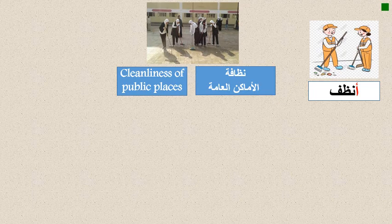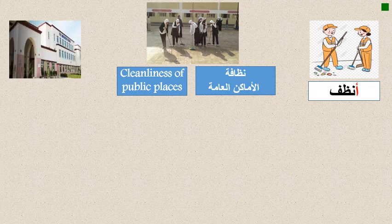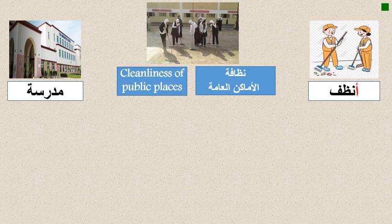If you talk about a girl, you will say تُنظِّف — she cleans. For example: she cleans the home or the school. We change the beginning of the verb each time. And أنظف means 'I clean.'